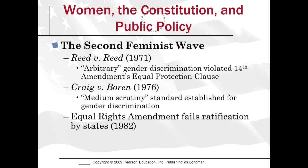In Reed v. Reed — the reason these people share the same last name is that this is a divorce case settled in 1971 — the Court ruled that you cannot establish the rules of divorce, like who gets custody of a child or income distribution, based on gender. You have to look at the facts of each individual case. This was the first time the Court said that gender must be questioned when used as the basis of a public policy.